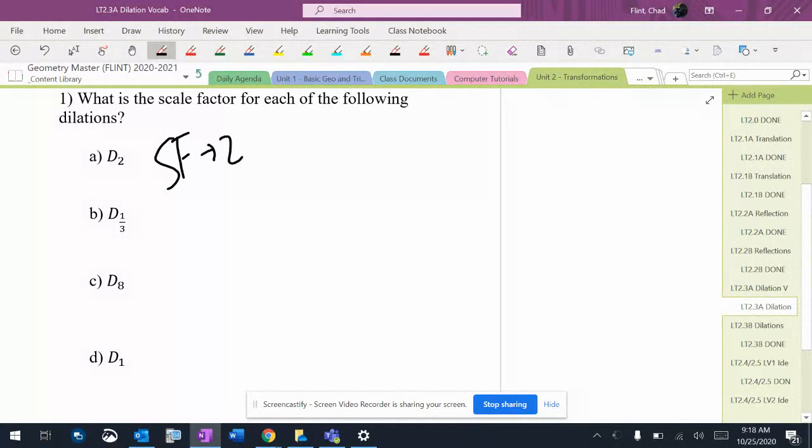So the scale factor is two. The image is going to get twice as big. This one is scale factor of one-third. The image is going to get smaller. It's going to get a third as big.